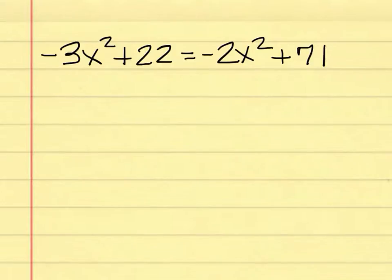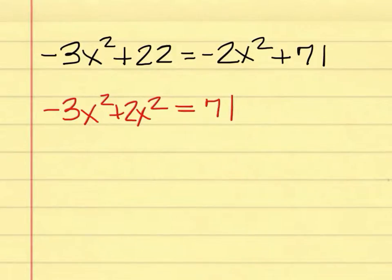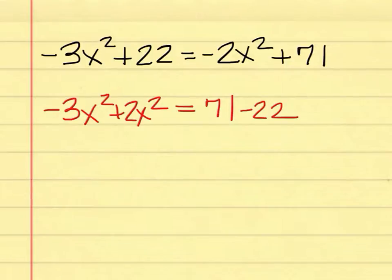What is the first thing I am going to do, Johnson? You're going to put x values on the same side. X values on the same side — she is right. When I put my x values on the same side, I already have this on the left. What am I going to write beside it, Blevins D? Plus 2x squared is right. On the right-hand side I have 71, but what am I going to write beside that, Clark? Minus 22 is right. On the left-hand side I have negative 3x squared plus 2x squared. What is that going to simplify to, Webb? Negative x squared is right.